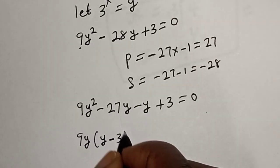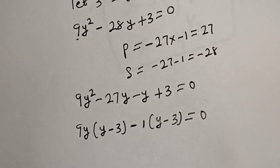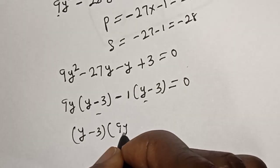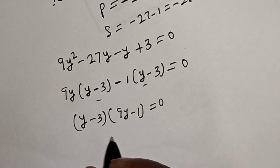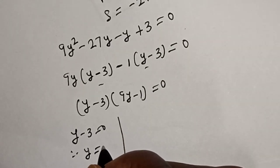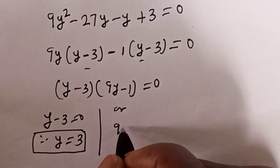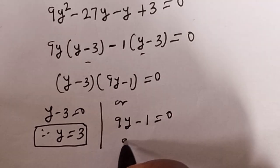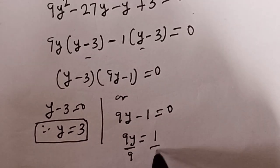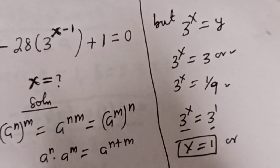This factors as 9y bracket y minus 3, minus 1 bracket y minus 3, is equal to 0. Then y minus 3 is common, giving y minus 3 bracket 9y minus 1 is equal to 0. From here there are two cases: y minus 3 equals 0, therefore y equals 3; or 9y minus 1 equals 0, giving 9y equals 1, so y equals 1 over 9.